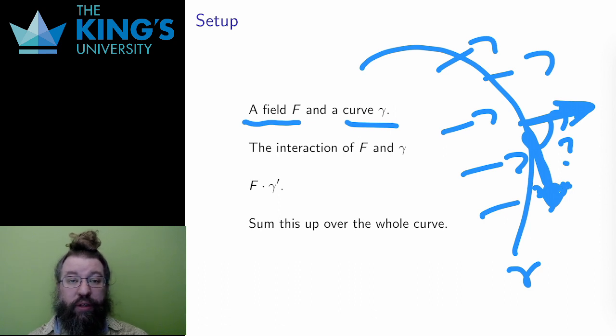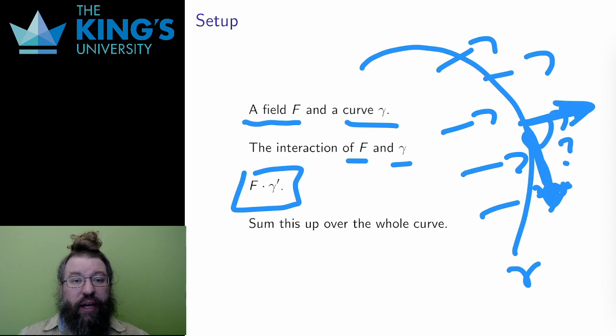The dot product measures the similarity of two vectors, being largest when they are in the same direction, negative when they are in opposite directions, and zero when they are perpendicular. So, given a field and a curve, the dot product with the tangent will measure the interaction. This dot product interaction tells me how the field and the direction of the curve interact at a single point.